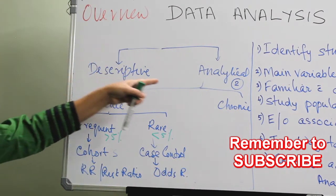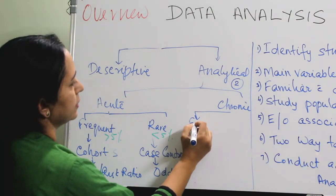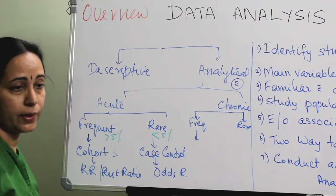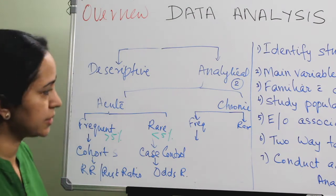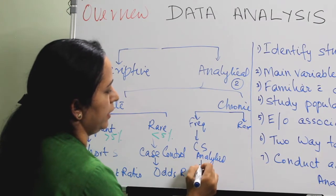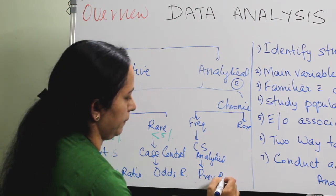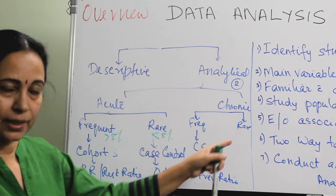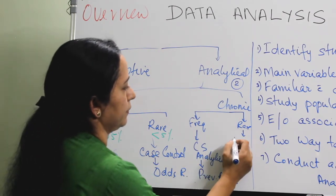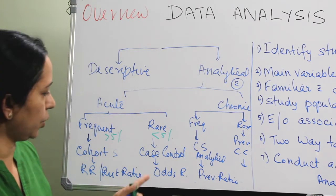For an analytical study design with a chronic condition, again divide into frequent or rare. Chronic and frequent: go with an analytical cross-sectional study and get the prevalence ratio. If it is a rare chronic condition, go with either a prevalence survey or a case-control study, and you get either a prevalence ratio or the odds ratio.